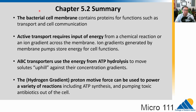That's it for 5.2. The bacterial cell membrane contains proteins that function in transport and cellular communication. Active transport requires energy input from chemical reactions or ion gradients. Ion gradients can store energy by pumping things across the membrane. ABC transporters use ATP hydrolysis to pump molecules against their concentration gradient. The proton motive force — a hydrogen gradient — can power reactions including ATP synthesis, which then powers other reactions, and can also pump toxic antibiotics out of the cell.